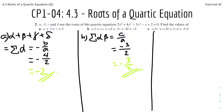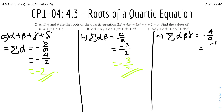Part c: alpha·beta·gamma + alpha·beta·delta + alpha·gamma·delta + beta·gamma·delta. This is the sum of the triples of the roots, written as the sum of alpha·beta·gamma, and this equals -d/a. From the equation, d is -1, so it's -(-1)/2 over a which is 2. Therefore this equals 1/2.